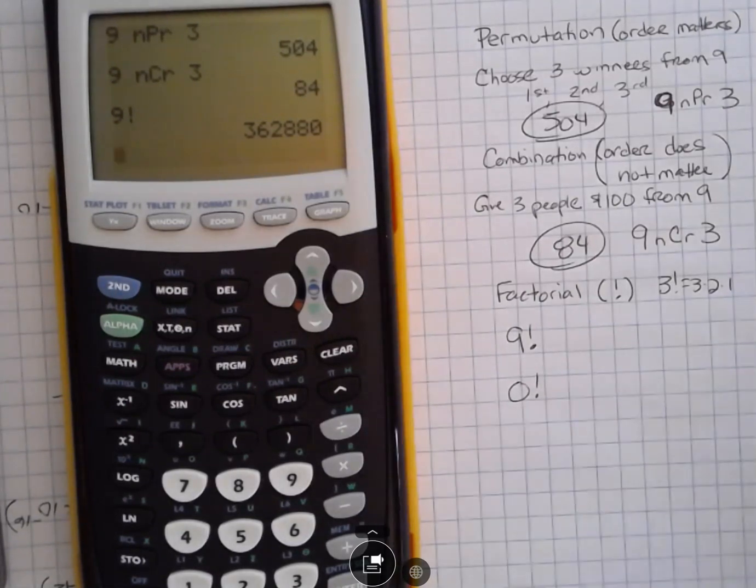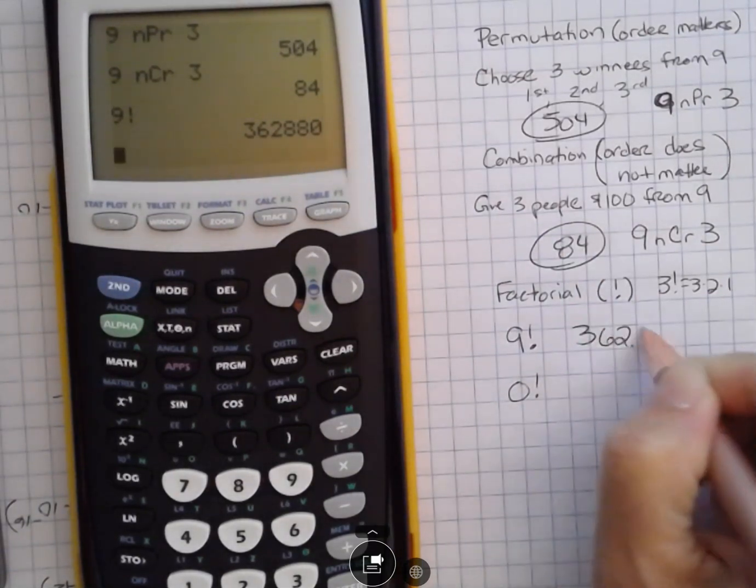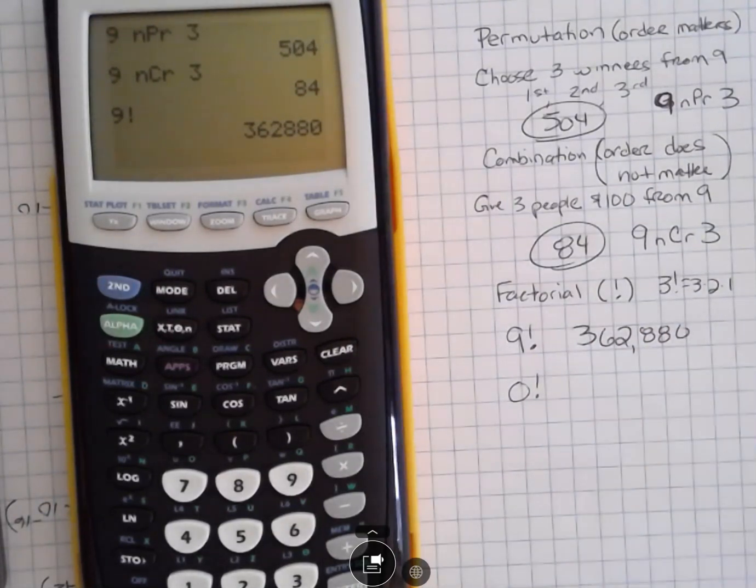A strange thing though is what do you get when you take zero factorial? This has to be, we need to have zero factorial to be what it is or else you wouldn't be able to do certain combinations or certain calculations.